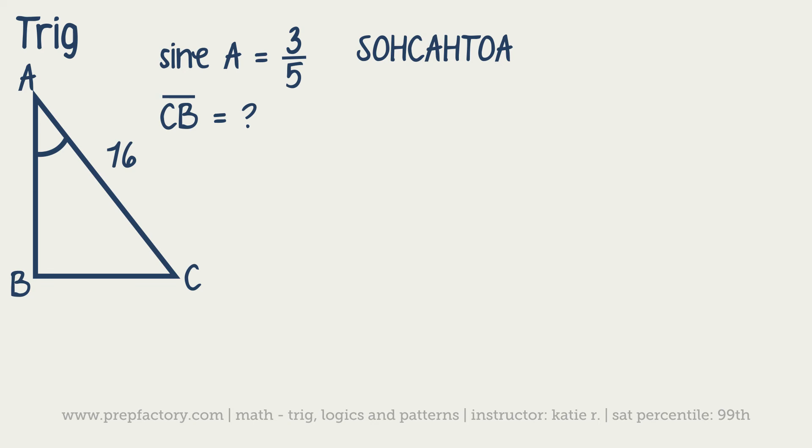If we remember the SOHCAHTOA, then we know that sine is opposite over hypotenuse. So the opposite is CB, which is what we're looking for, over the hypotenuse. So we know that sine of A is equal to our opposite, x over 16. And they also told us that sine of A is 3 over 5.